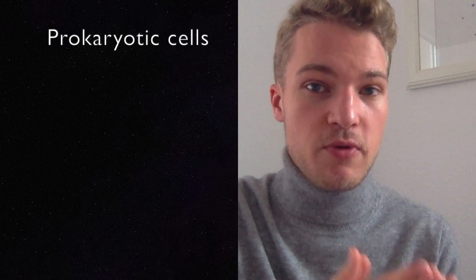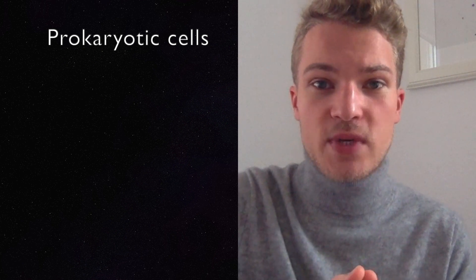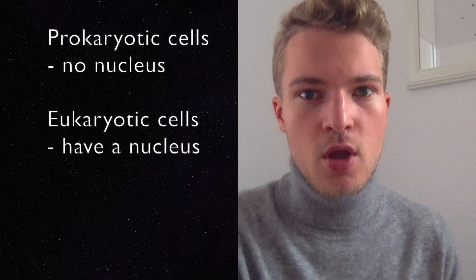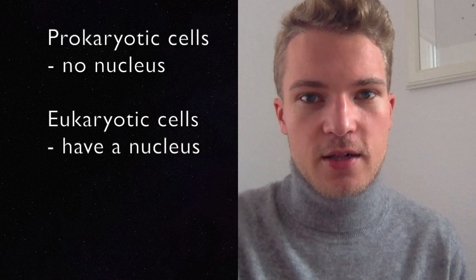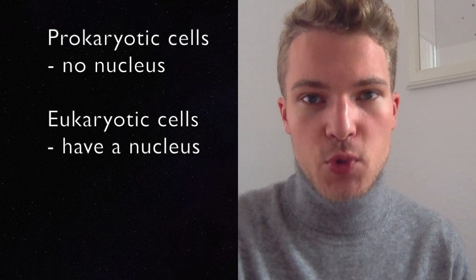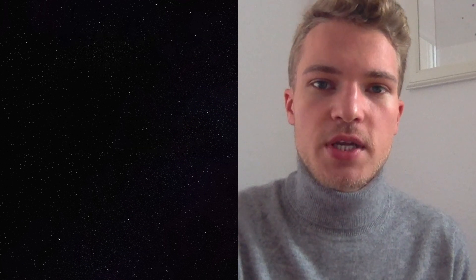"Pro" means before, and "karyotic" comes from the Greek word for core — so prokaryotic means "before the core." That means cells we say are prokaryotic do not have a cell core, which is what we call the cell nucleus. On the other hand, there are eukaryotic cells: "eu" means true, so they do have a core. Eukaryotic cells do have a nucleus.